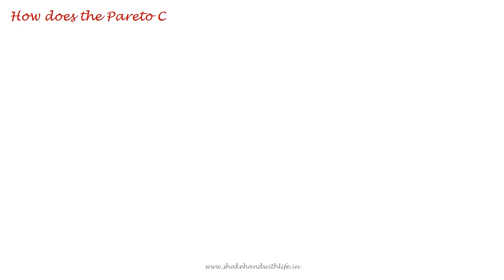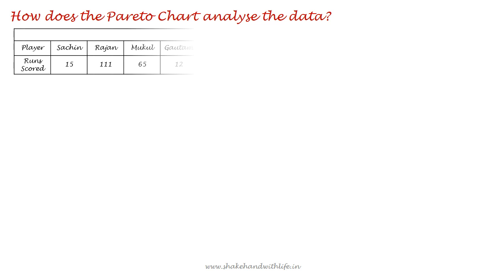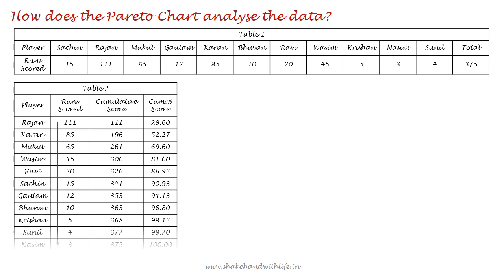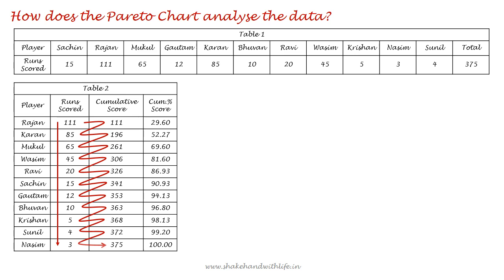How does the Pareto chart analyze data? Table 1 shows the runs scored by 11 players of a team in a cricket match. To analyze this data using a Pareto chart, first arrange all the data in descending order. Then calculate the cumulative score by adding each succeeding value to its preceding value, taking the first value as it is. Next, calculate the percentage cumulative score.